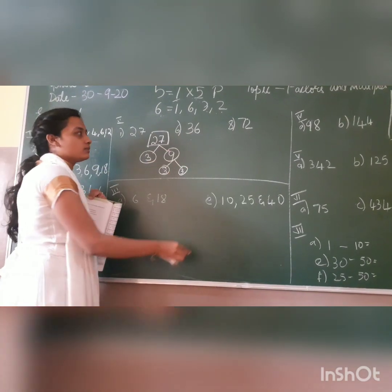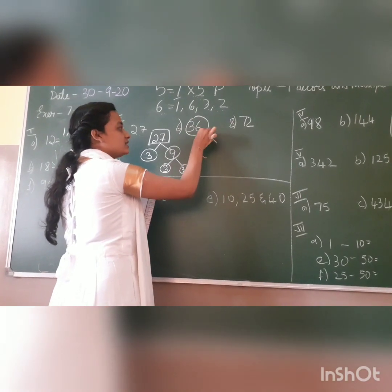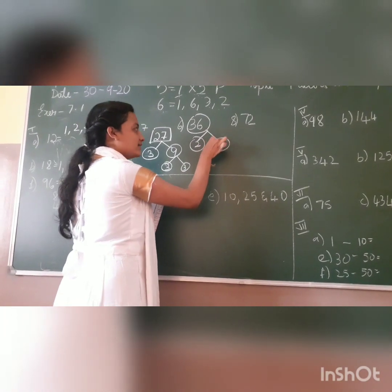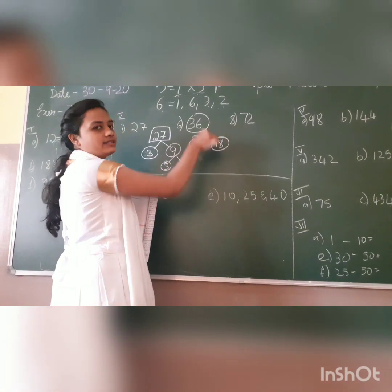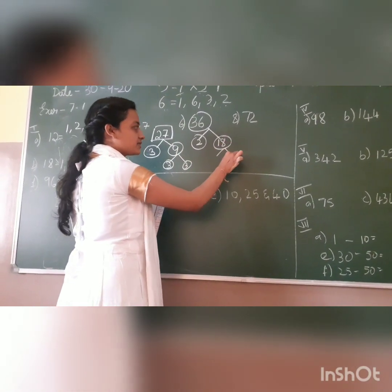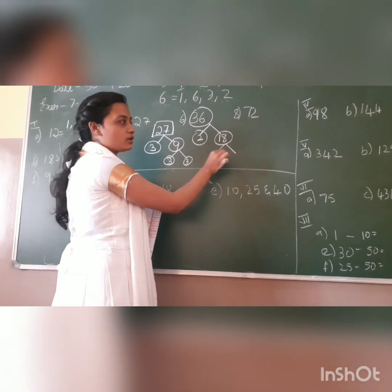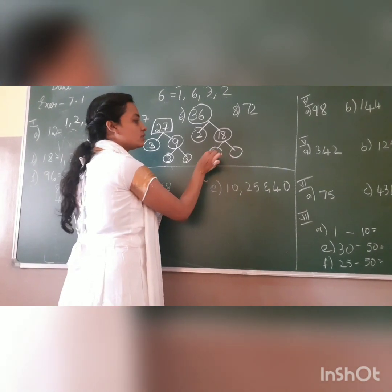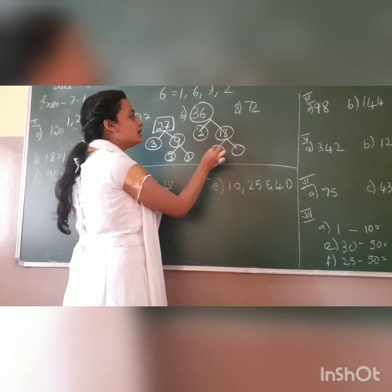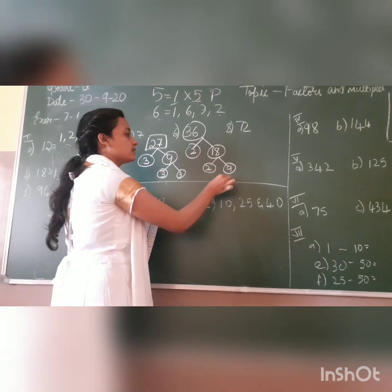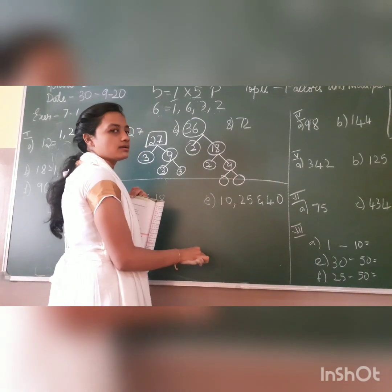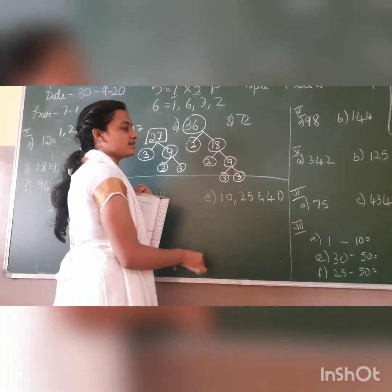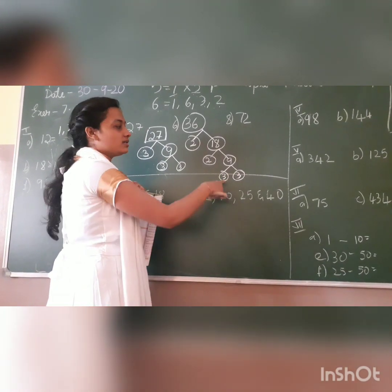Now go for the second one: 36. Start by dividing with 2: 2 × 18 = 36. 2 is a prime number so I divide further. Again with 2: 2 × 9 = 18. Now divide 9: 9 comes in the 3 times table, so 3 × 3 = 9. I can't go further because I got a prime number. The prime factors of 36 are 2, 2, 3, and 3.